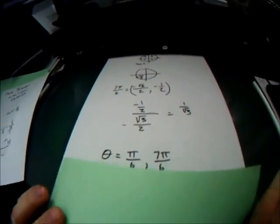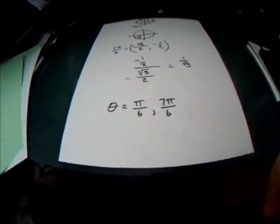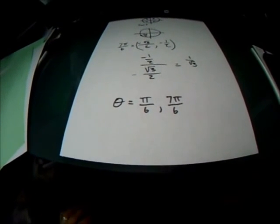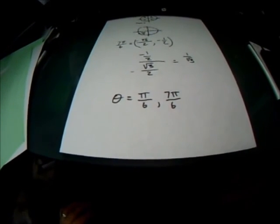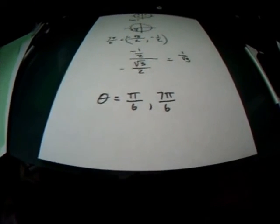So our two values of theta are going to be theta equals pi over 6 and 7 pi over 6.